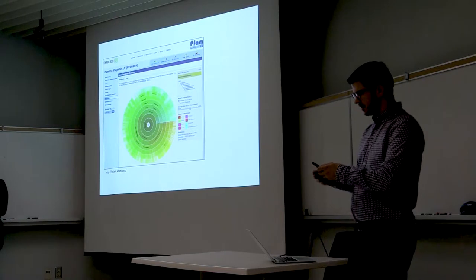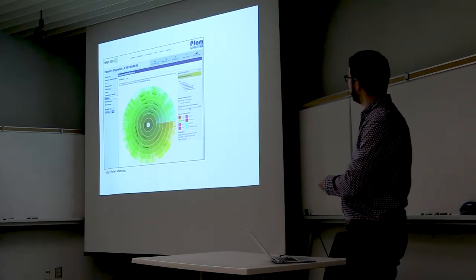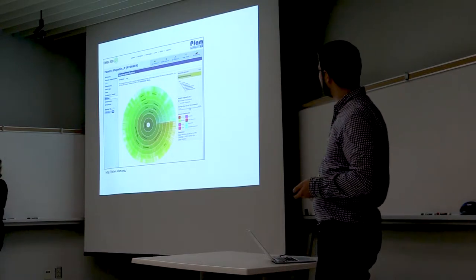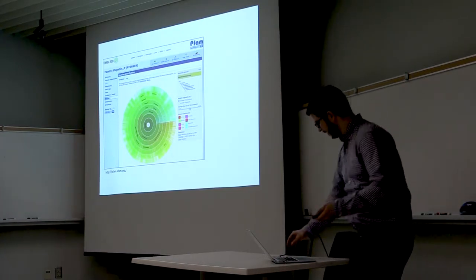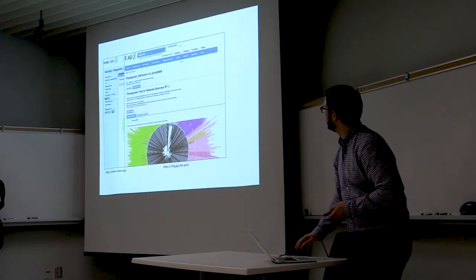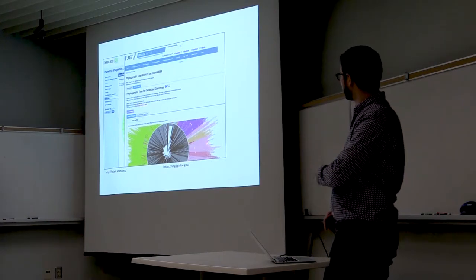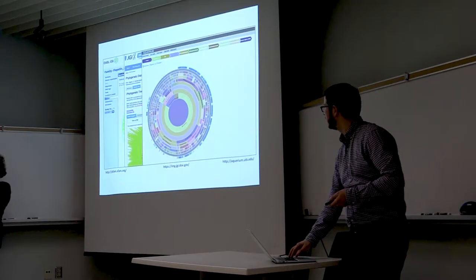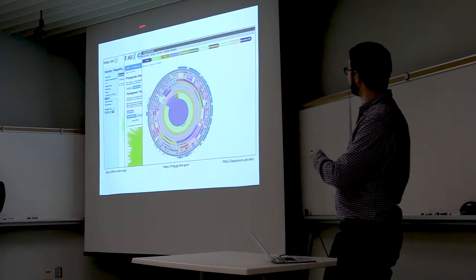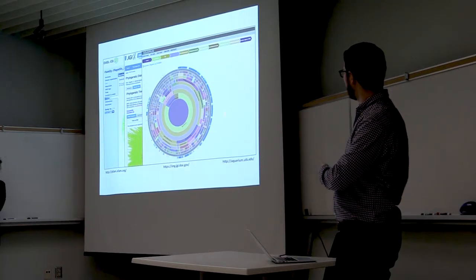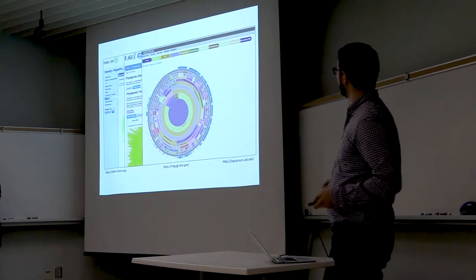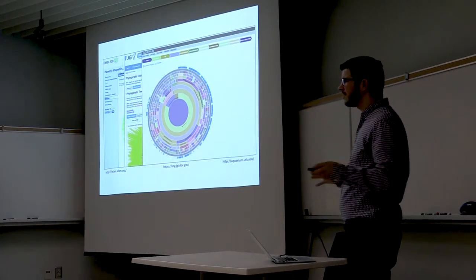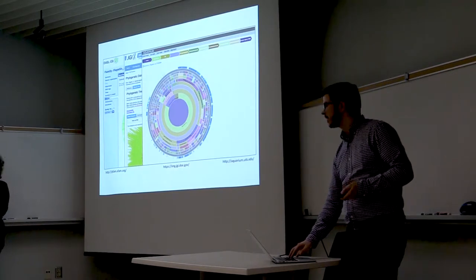There have been some attempts to do that in the past. PFAM lets you pick any protein family and visualize it mapped onto a tree — a pretty decent visualization. Here's another example from the JGI database, which is trying to map functional information onto a tree. There's also a more recent resource called Aquarium doing a fairly nice job mapping presence and absence of a gene family onto an NCBI-based taxonomy. But none of these are really doing the trick — there's more that can be done.